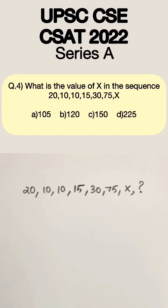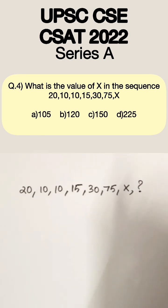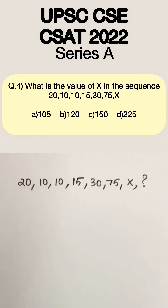What is the value of x in the sequence 20, 10, 10, 15, 30, 75, and x? So we are supposed to find the x. So what is the abrupt thing that you're able to notice right away?